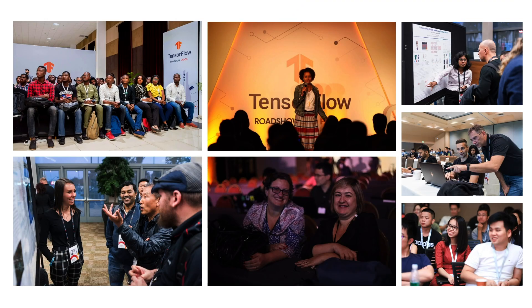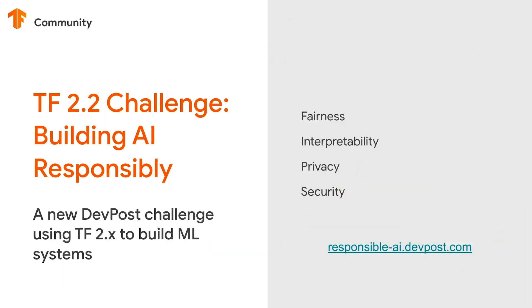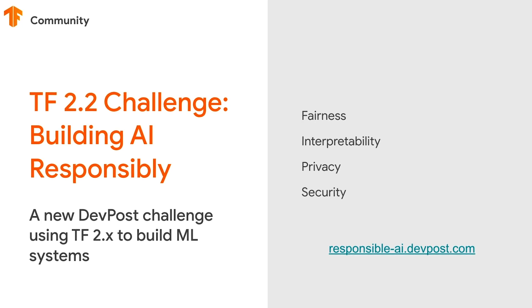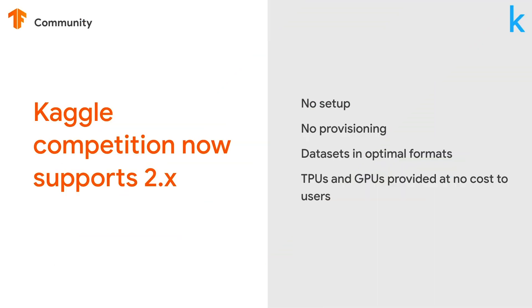And number five on our list — you can share your work with the broader TensorFlow ecosystem and get recognized for your contributions. First up, we're announcing the Responsible AI Dev Post Challenge, which gives you the ability to use the machine learning fairness tools I just mentioned to create equitable AI models. We're delighted to announce that Kaggle competitions now support TensorFlow 2.2 and TPUs. Be sure to check out the new kernels and try migrating code from CPU to GPU to TPU.